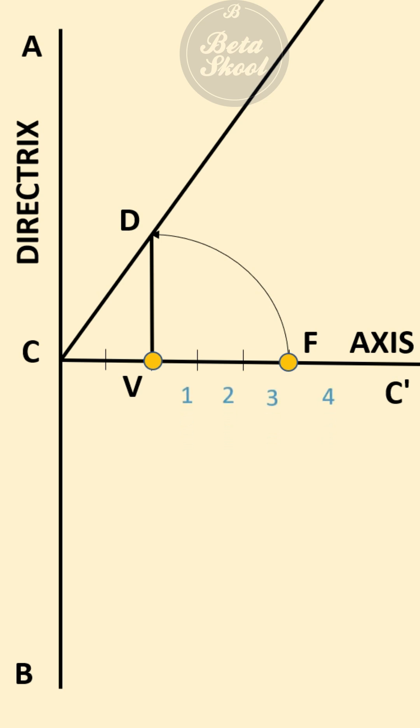Through these points, you draw vertical lines which meet the line CD at points 1', 2', 3', 4'. Now you have to extend these perpendicular lines through points 1', 2', 3' in the lower side also.